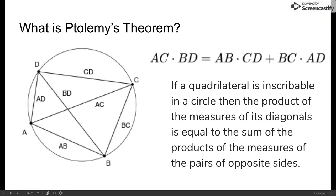Or in English, if a quadrilateral is inscribable in a circle, then the product of the measures of its diagonals is equal to the sum of the products of the measures of the pairs of opposite sides.